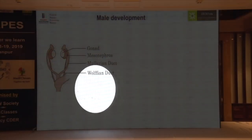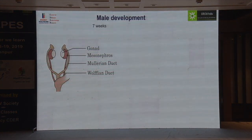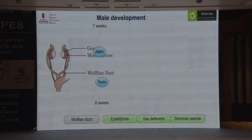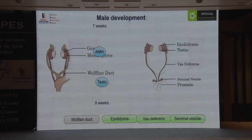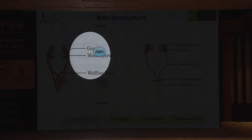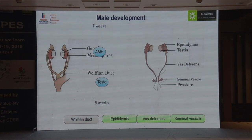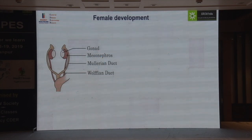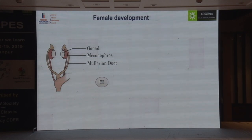Regarding internal structure development: in males, at seven weeks AMH suppresses the Müllerian duct, and the Wolffian duct then develops under testosterone into the epididymis, vas deferens, and seminal vesicles. If AMH is absent or not functioning, you will have persistent Müllerian duct syndrome — in that case the testes cannot descend because they are blocked by the Müllerian structures. Female development is basically a passive process, but you need testosterone to sustain the Wolffian structure.